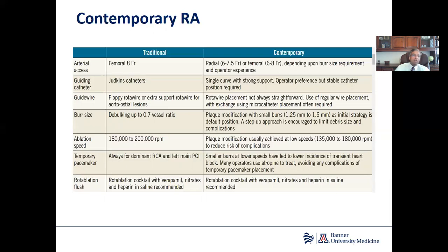Burr size approach has changed. We no longer aim to debulk. Our goal is to obtain a burr-to-artery ratio of 0.5, usually starting with a 1.5 mm burr as an initial strategy with a step-up approach as needed. Ablation speeds have come down from 180,000 RPM traditionally to now 160,000–170,000 RPM, the idea being less heat generation, less platelet aggregation, and hence less slow flow.